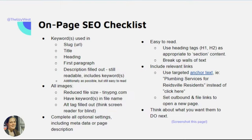Have your keyword in the image file name and fill out your alt tag. Your alt tag is a screen reader for the blind, so you're going to make it sound like it makes sense if you are reading it out loud or describing that picture to another person. I'll show you an example of where that's located.